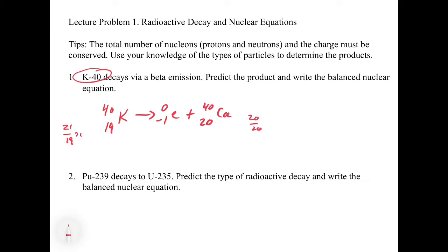Let's look at this next one. So this one is plutonium-239 decays to uranium-235. Predict the type of radioactive decay and write the balanced nuclear reaction. This is a really good one because this is one where you'd have to figure out what came off.